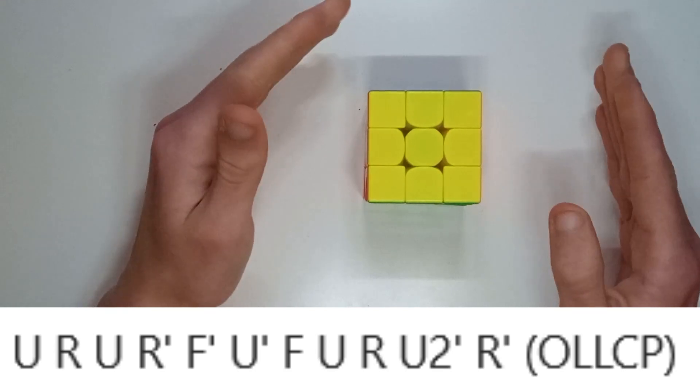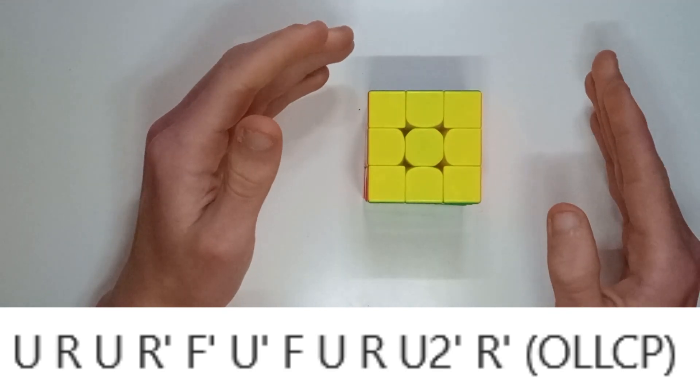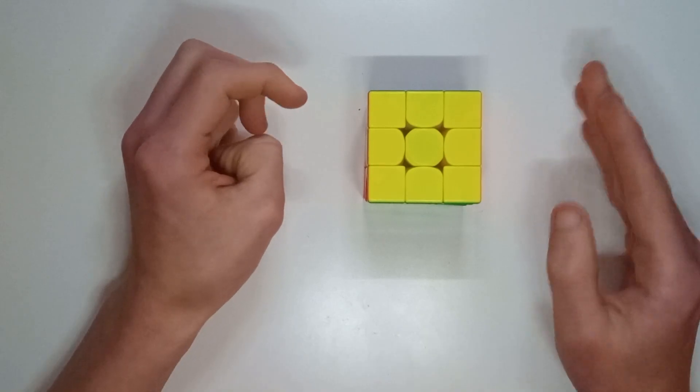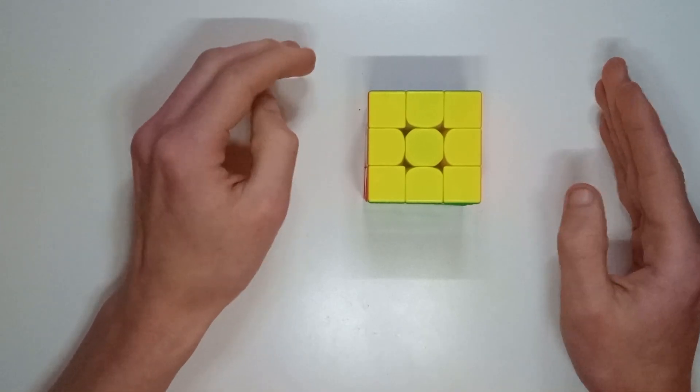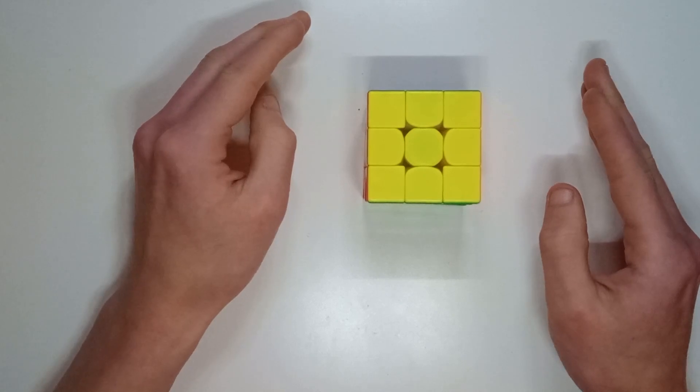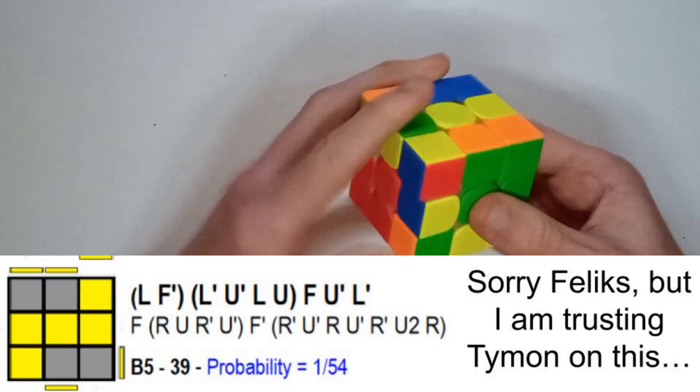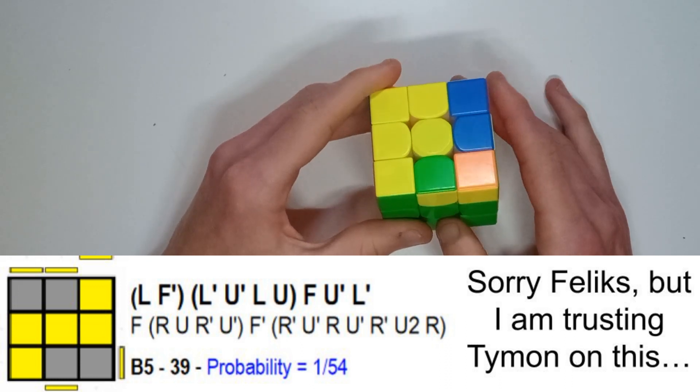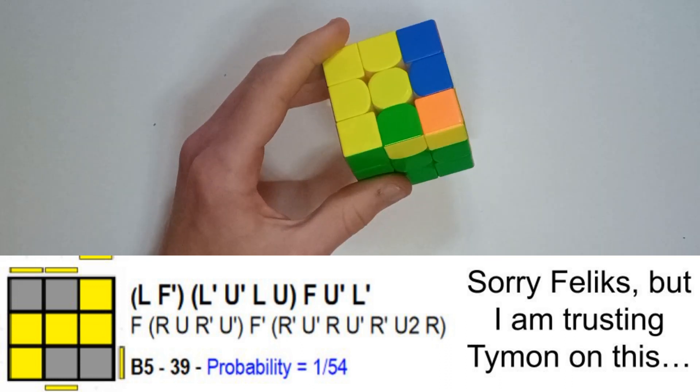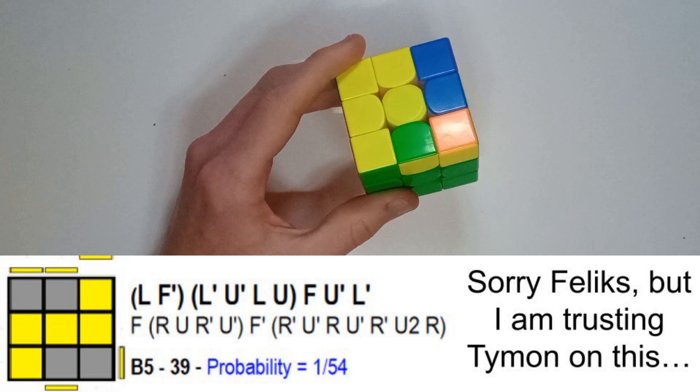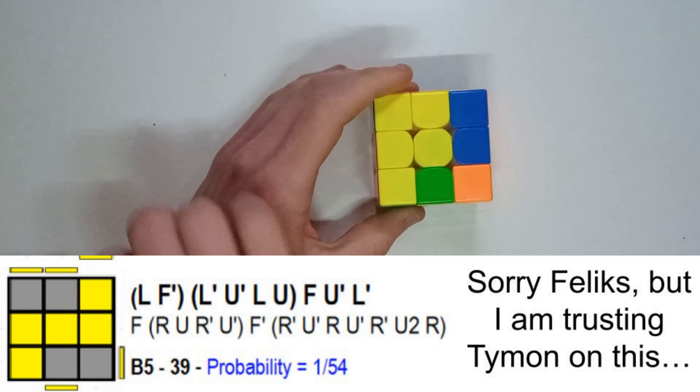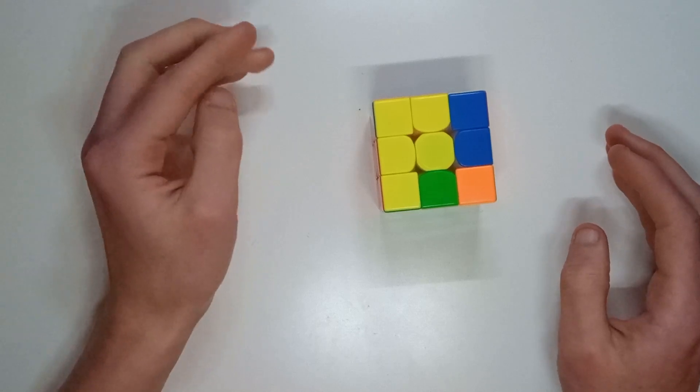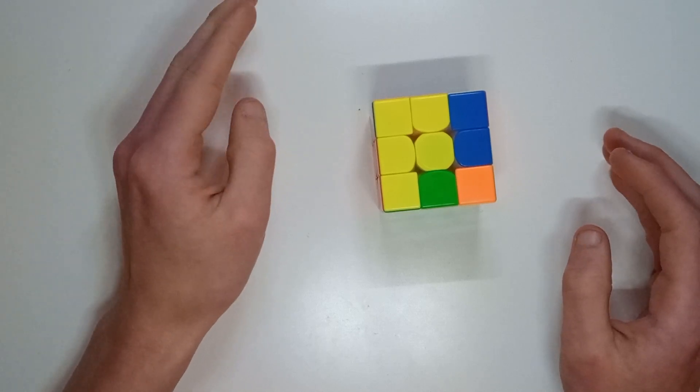But he does this OLL which interestingly isn't the one I would do, but I think I might be switching to that one because what I discovered what I would do is the left version of that, which is actually like that, which is really silly in many ways I can do it quite fast, but I think I might switch to that. It does do the same thing in terms of the PLLs, I think it's just the same algorithm but from a different angle.